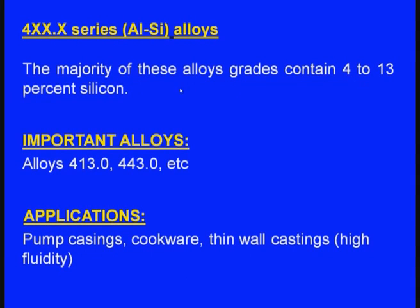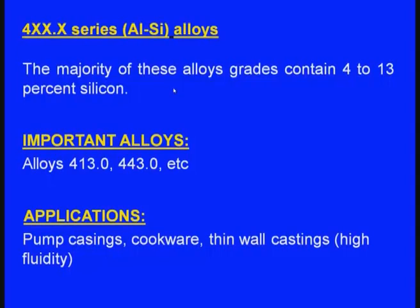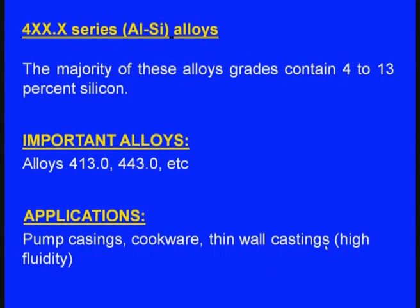In the 4xx series, the majority of these alloys contain 4 to 13 percent silicon. Important alloys include 413.0 and 443.0. Applications include pump casings, cookware, and thin-wall castings. Thin-wall castings can be produced successfully because silicon is up to 13 percent — silicon offers maximum fluidity to the casting alloy because during solidification it releases latent heat of fusion, increasing fluidity, and that is how thin-wall castings can be successfully made using the 4xx series.